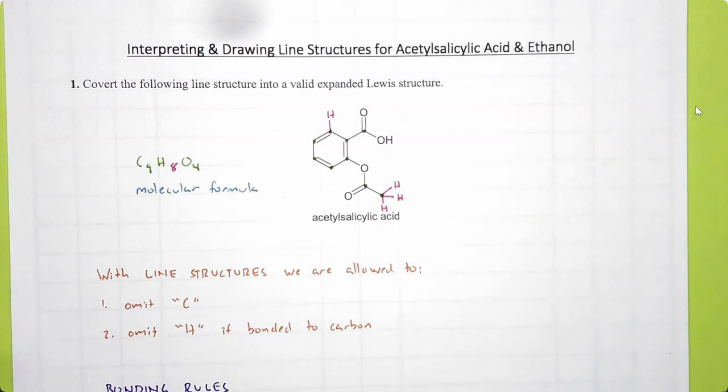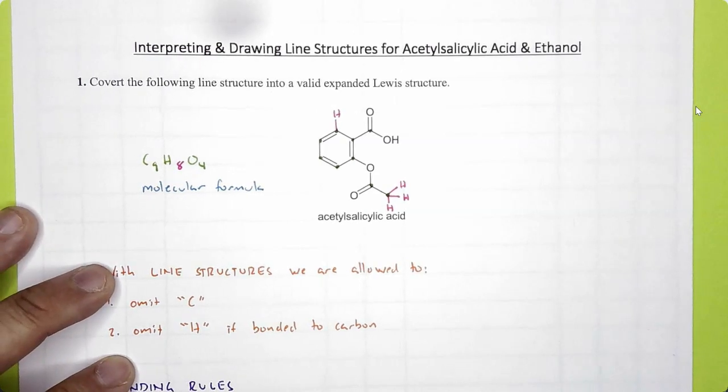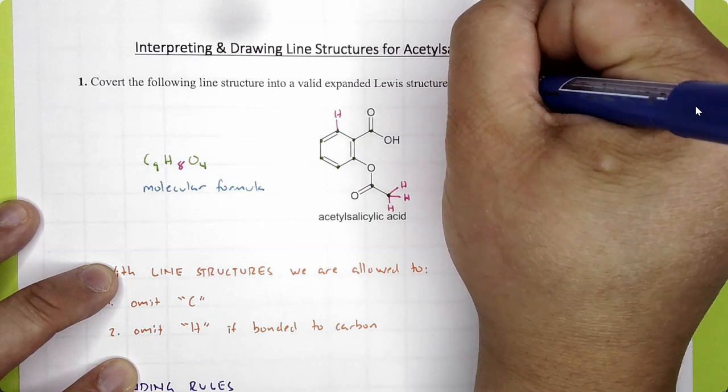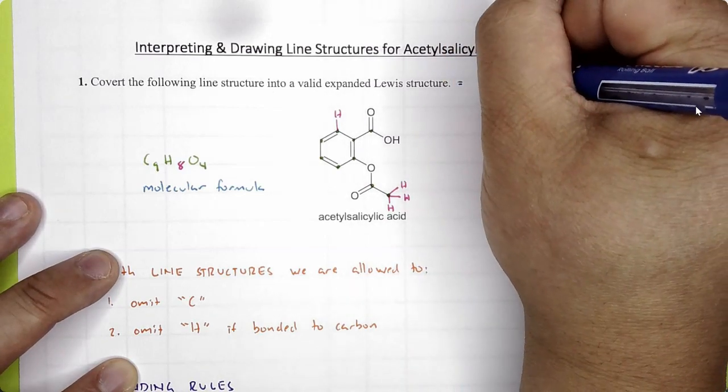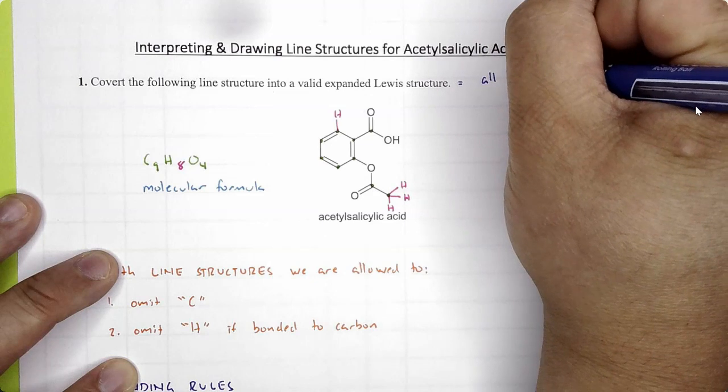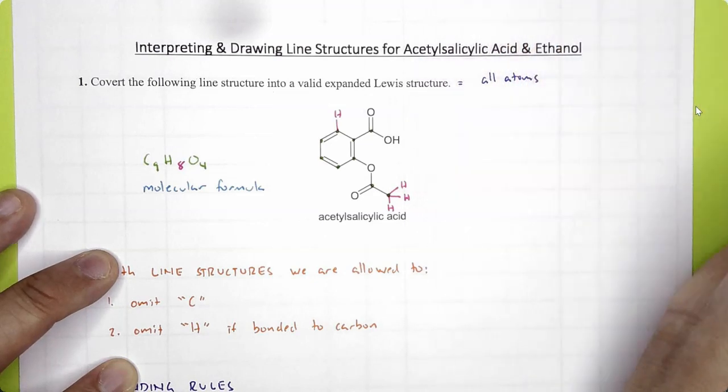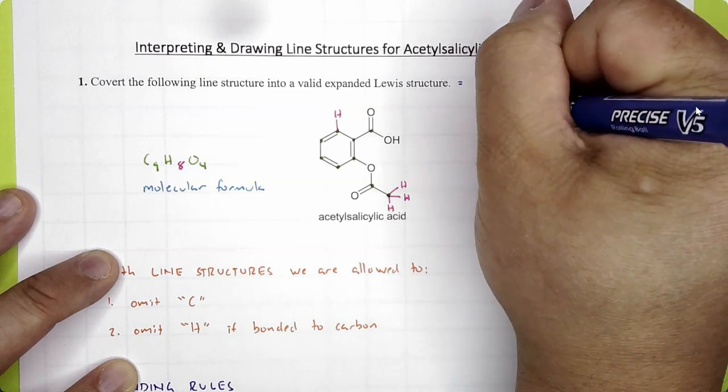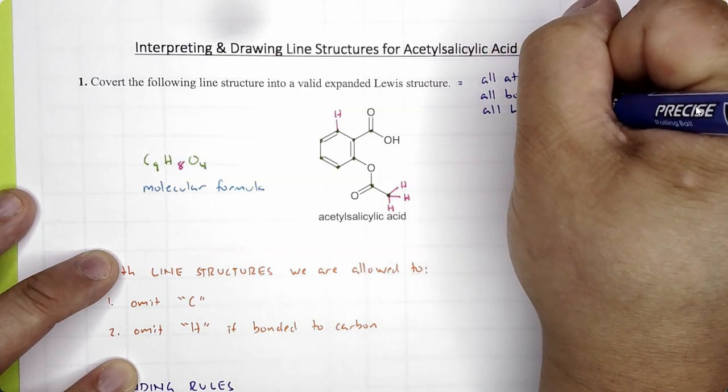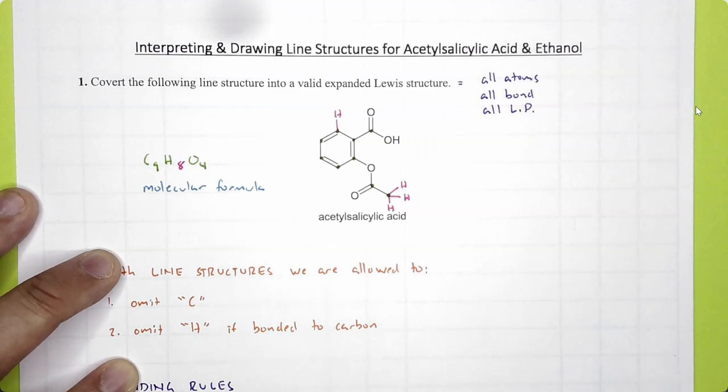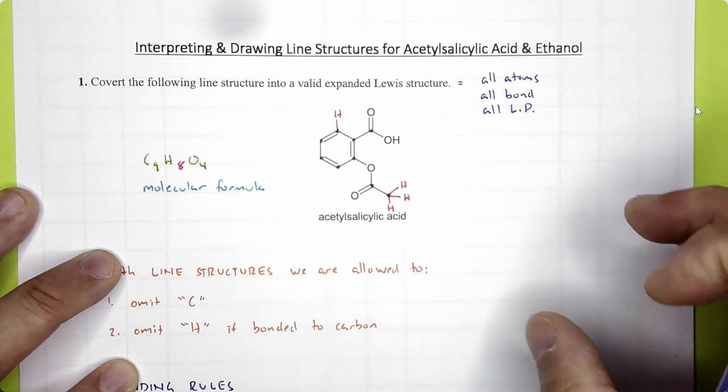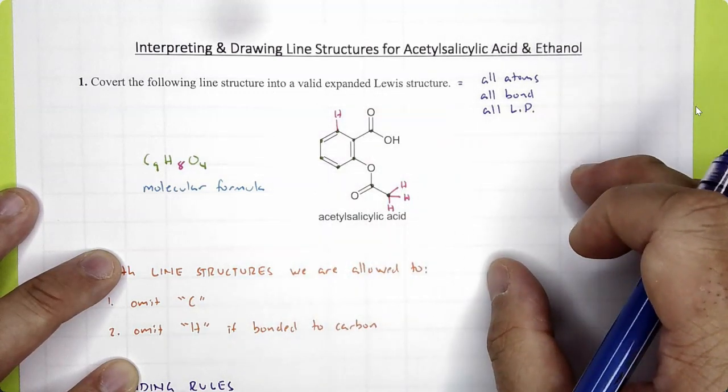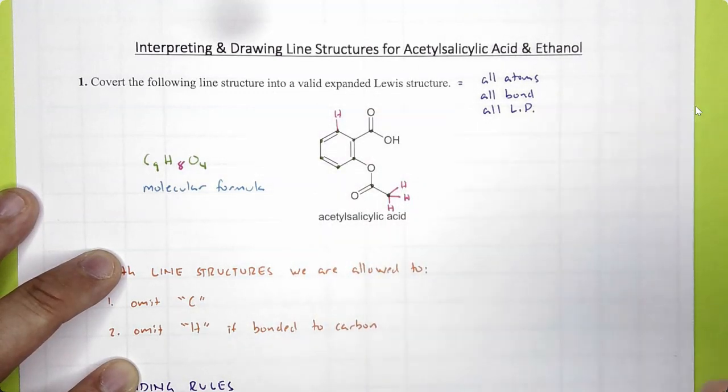We now have all the information we need to draw the expanded Lewis structure. For the expanded Lewis structure, you need to show all atoms as letters, all bonds as lines, and all lone pairs. Go ahead and pause the video and draw your expanded Lewis structure right here, and then double check your answer against mine.